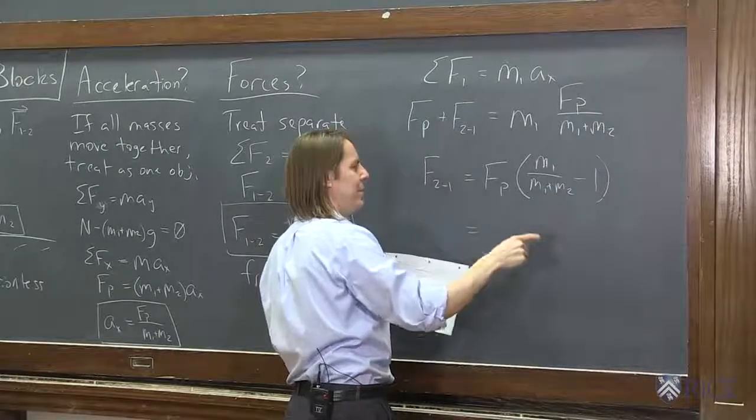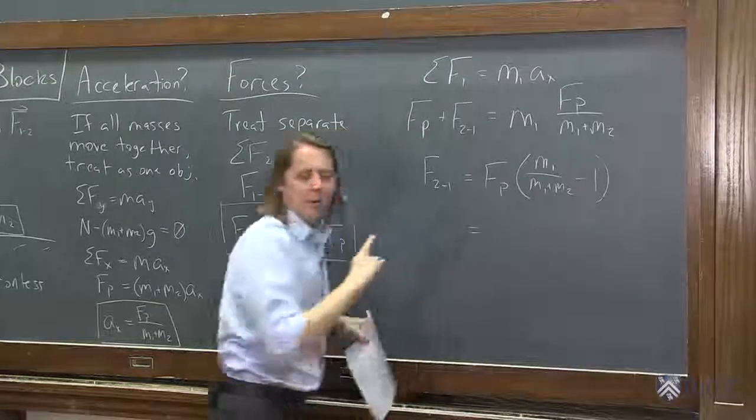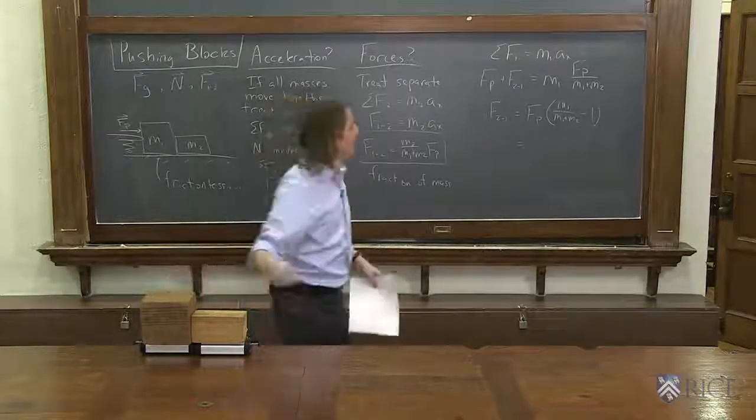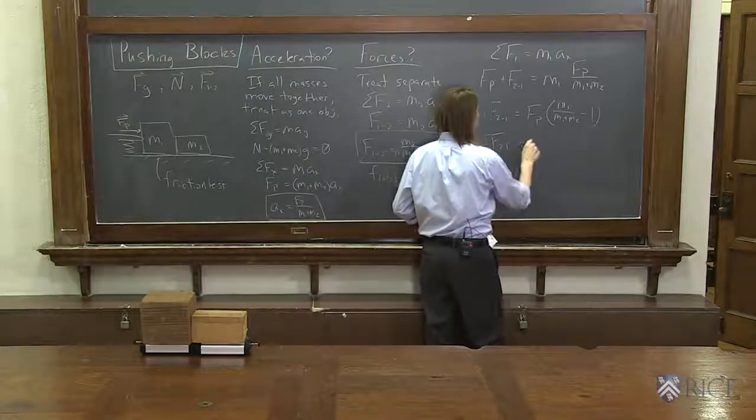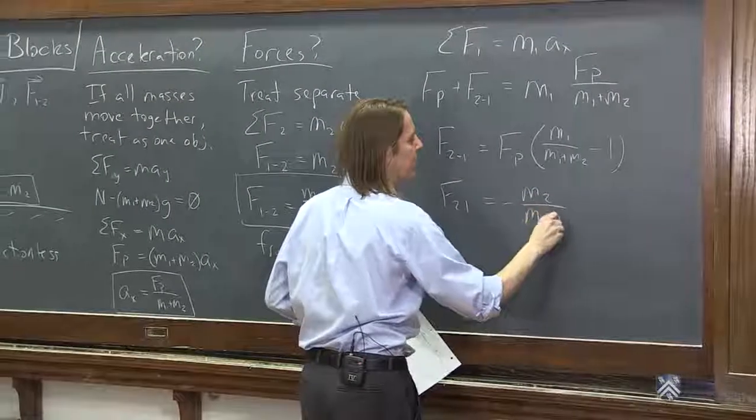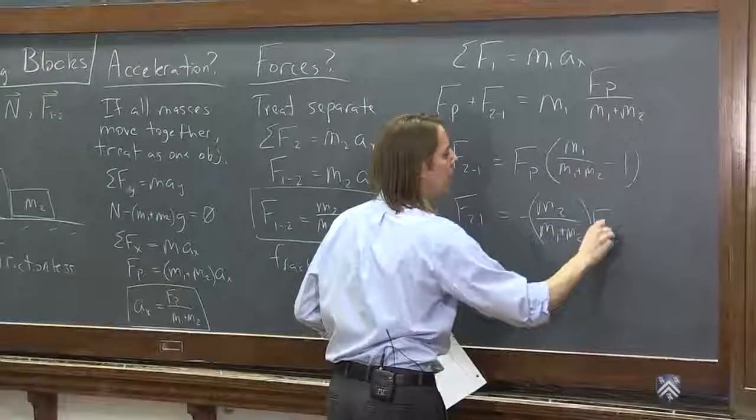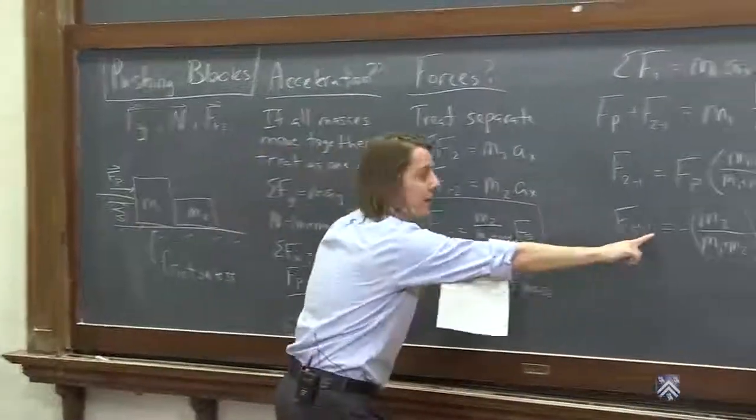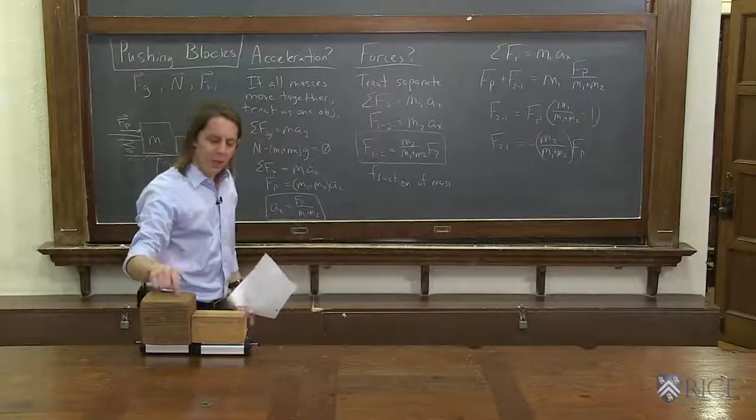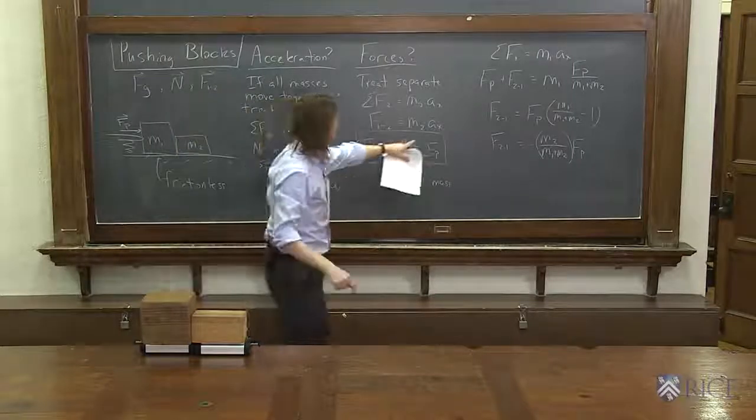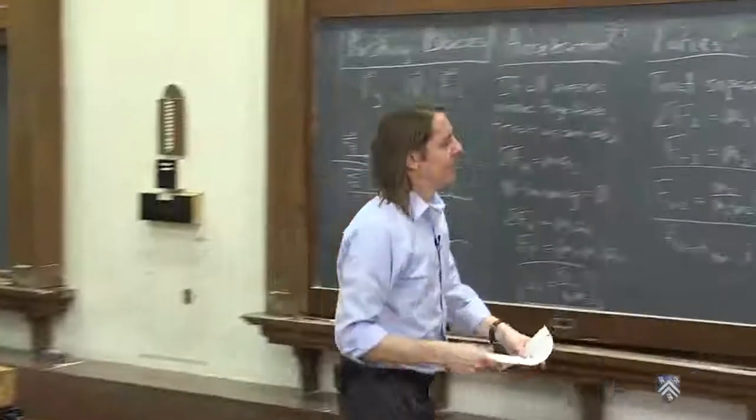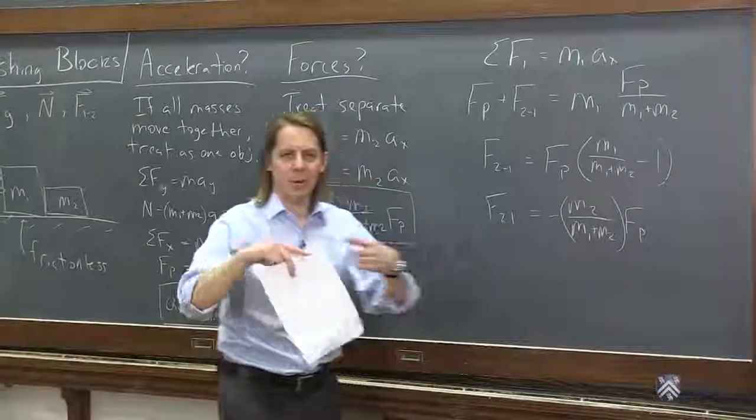But we're not figuring out the total force on this block. We're figuring out this force that 2 applies to 1. So let's finish it. And we see that F21 is negative M2 over M1 plus M2 Fp. And look, they're the opposite of each other. We just did Newton's third law, action-reaction pair. If the block 1 pushes on 2 by this amount, M2 over M1 plus M2 Fp, then this block has to push on this block by the amount M2 over M1 plus M2 Fp, just in the opposite direction.